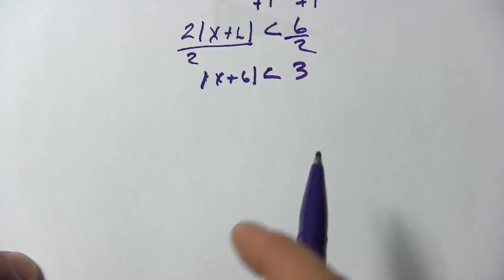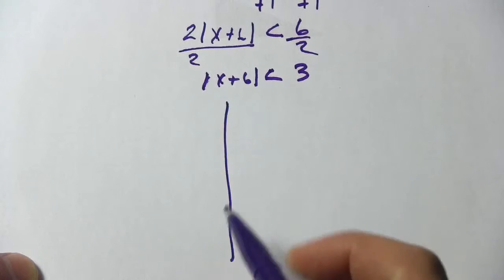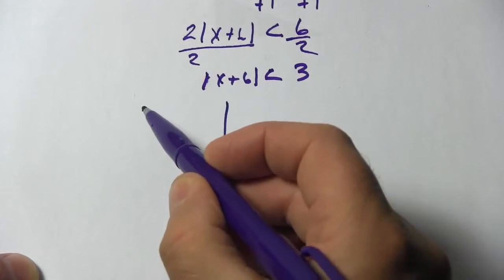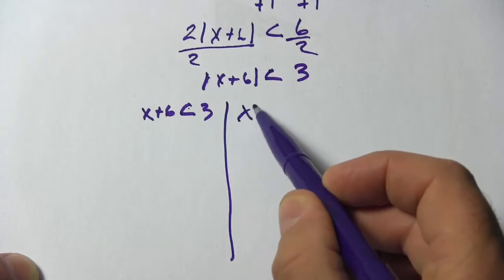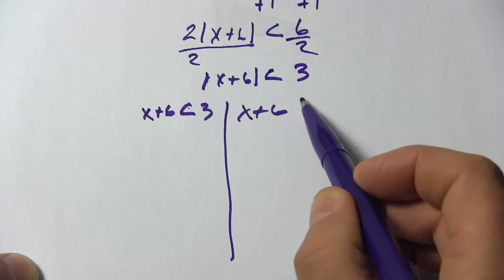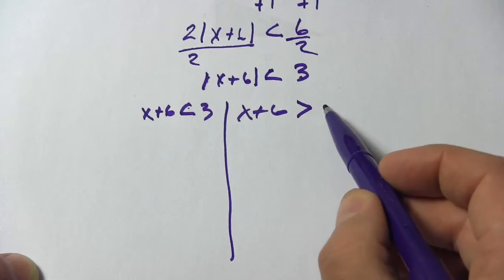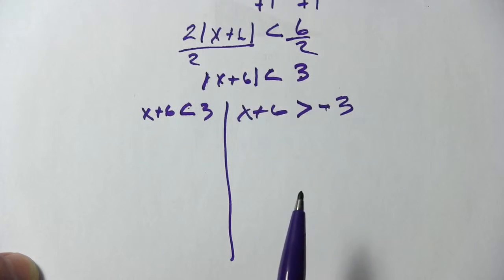And at this stage, we're going to split this into two inequalities. So we have x plus 6 is less than 3. And then for the second one, we have x plus 6 is, we're going to flip the sign and make the other side negative. So we have greater than negative 3.